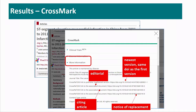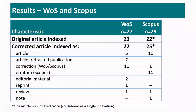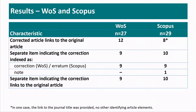When we looked at Web of Science and Scopus, we found that not all original articles were indexed. And when we looked at how the corrected articles were indexed, it was indexed as article, but not in all cases. It was indexed as article or retracted publications in two cases in Web of Science. You had them as corrections, you had the miserata in Scopus — there were even editorial material, reprint reviews. So there was inconsistency in indexing these published items. We found only in 12 out of 27 in Web of Science and in 18 in Scopus that the corrected article links to the original articles. And only in some cases did the separate item indicating the correction link to the original article.